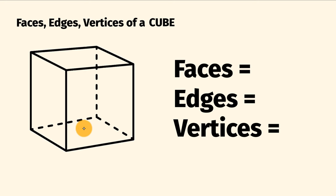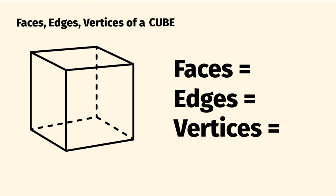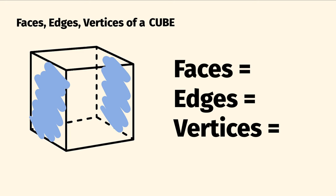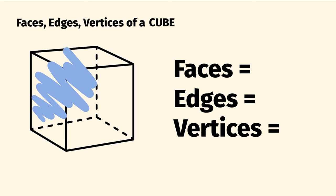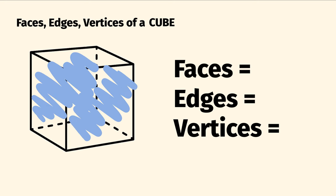That is the number of flat surfaces. So, we're looking at a cube. We have one on the top here, and we have one on the bottom. We have one on the left here, and one on the right. And as well as that, we have one at the back here, and one at the front. So all together, we have six faces in a cube.